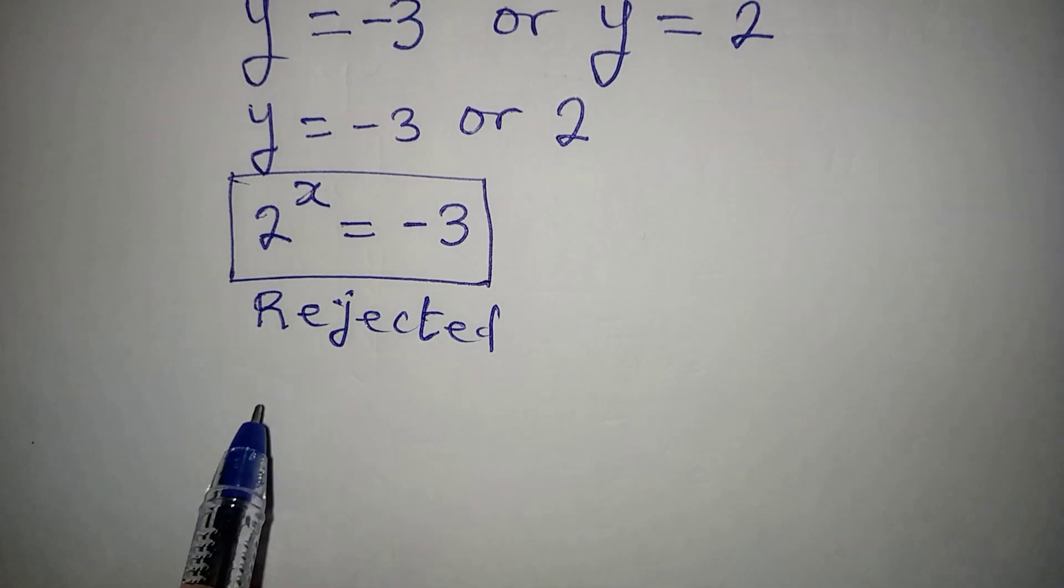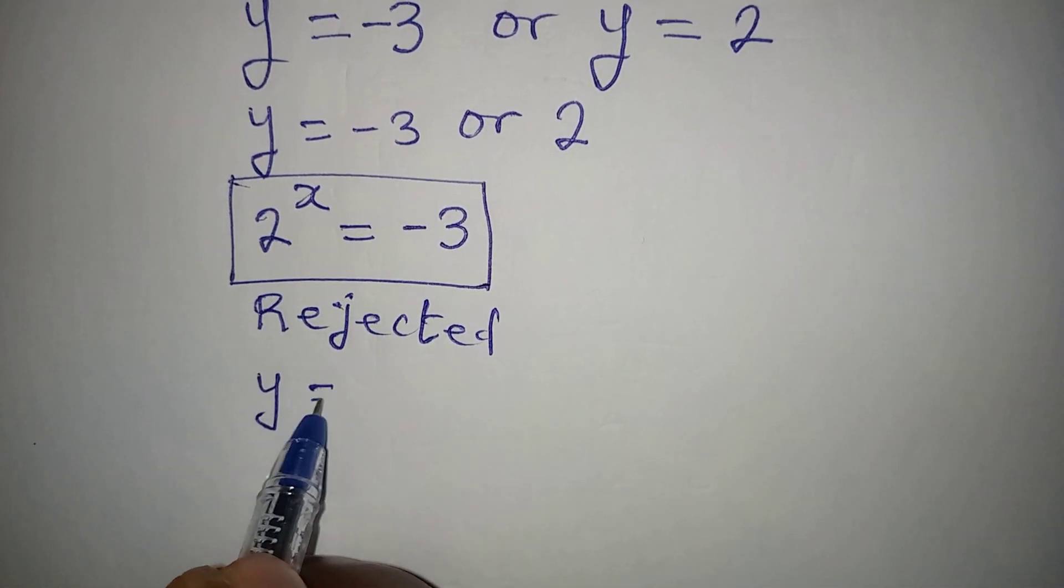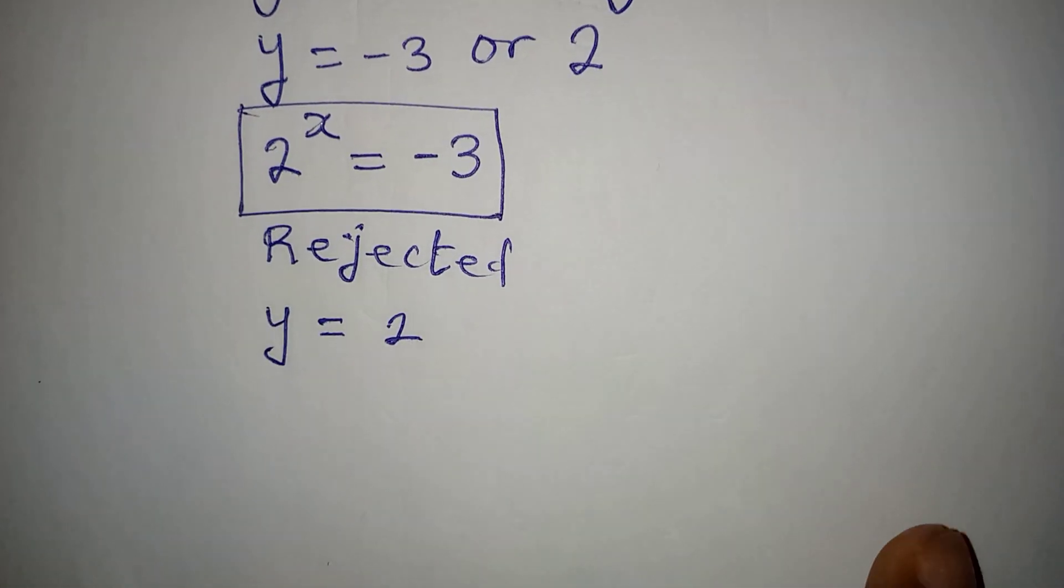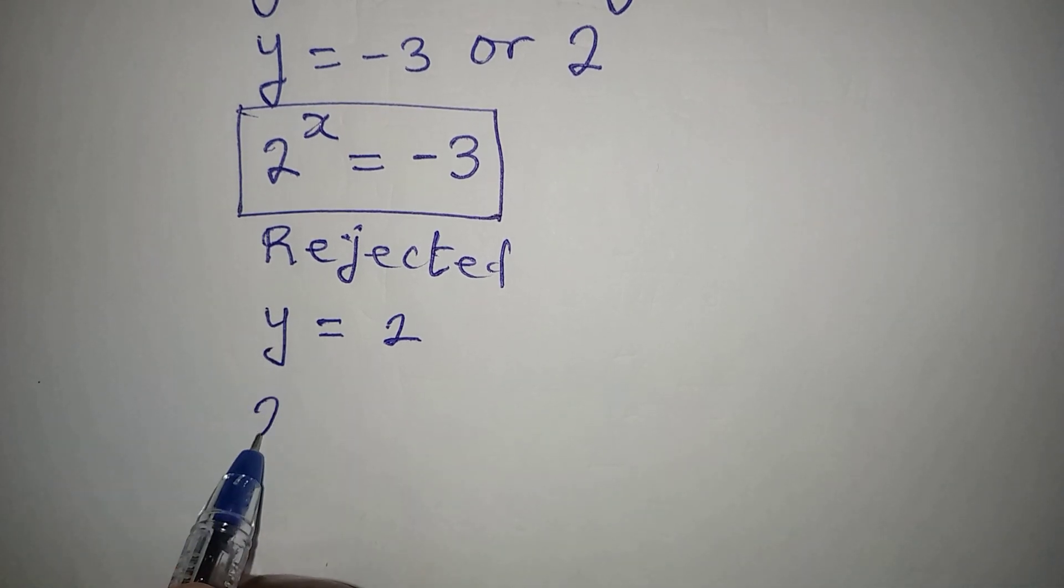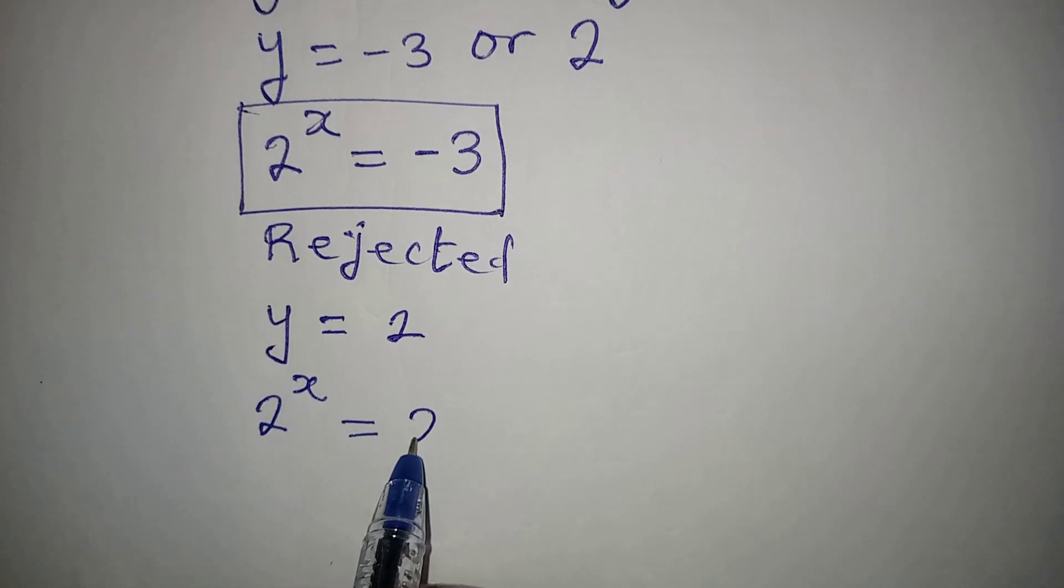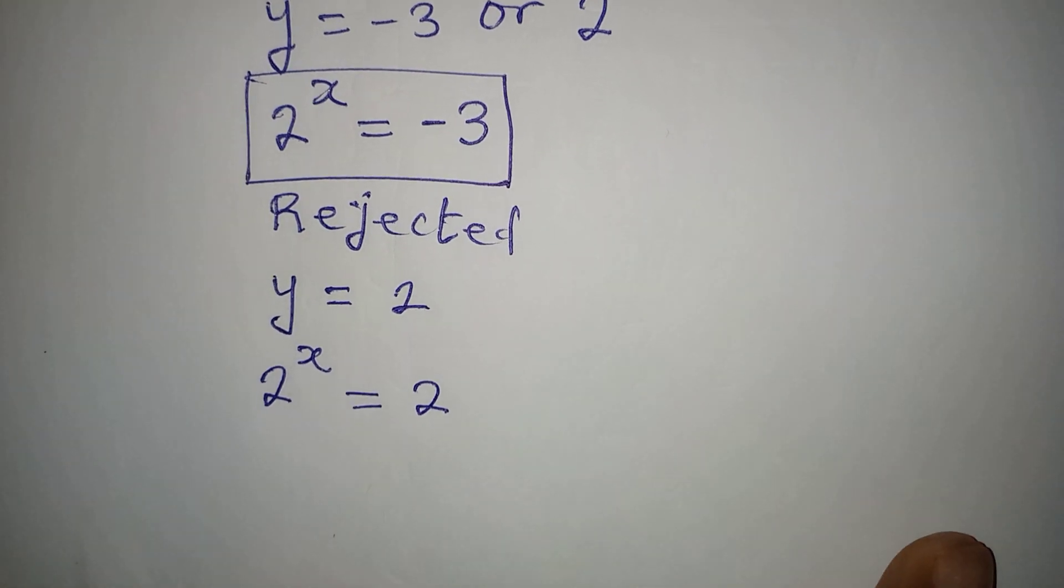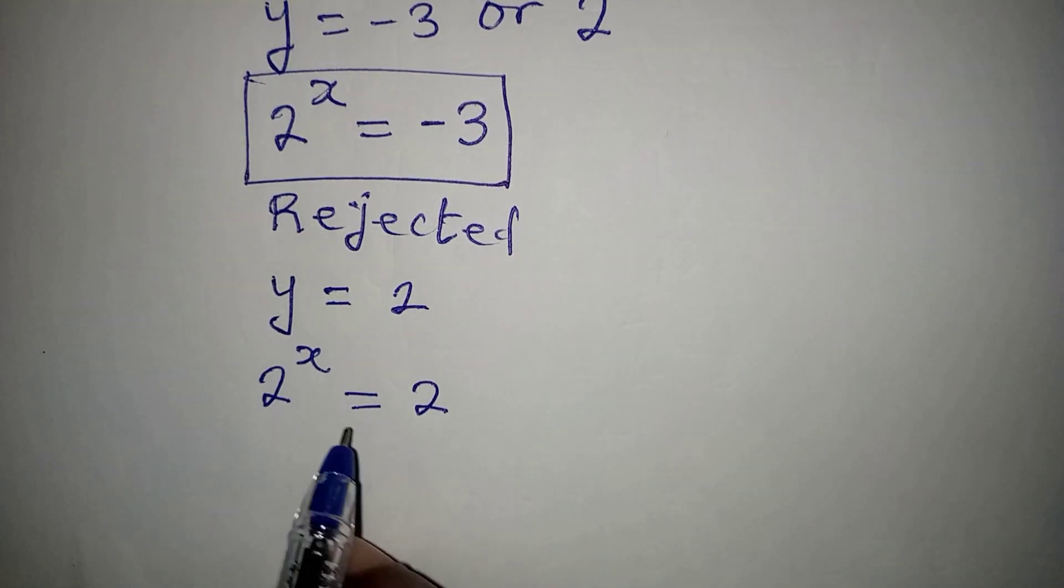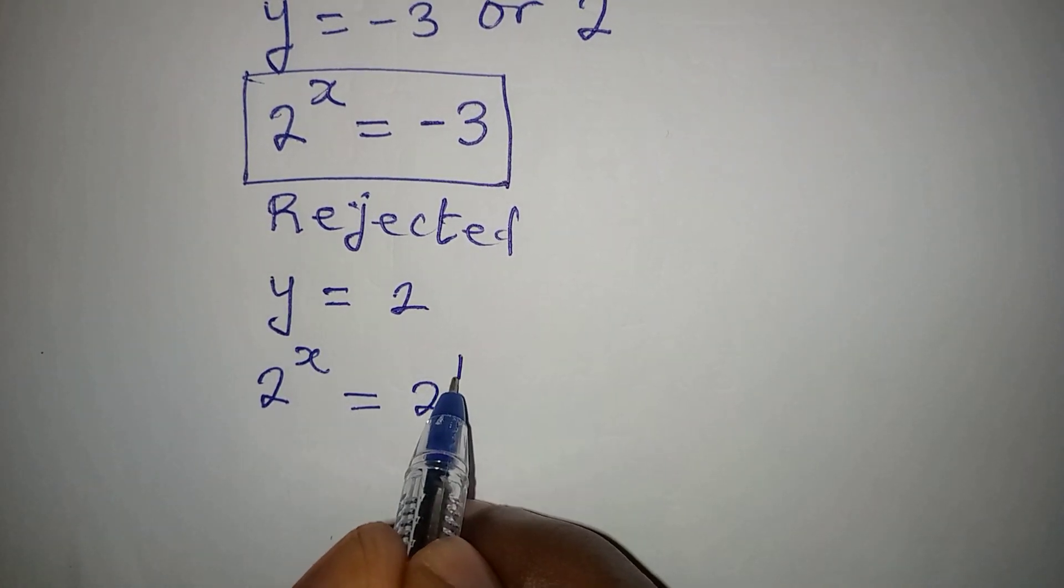Then the second value of y, where we have y to be equal to 2. And now, y itself is 2 to the power of x being equal to 2. Now, what do you observe? You will see that from here, 2 can also have power of 1.